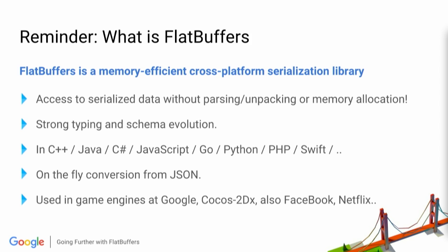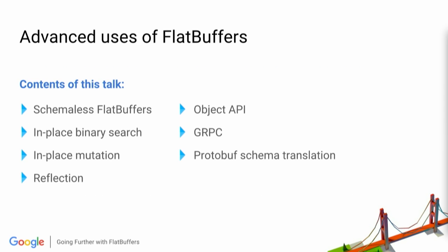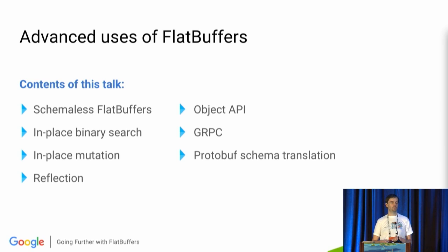If you're going to remember just one thing about it, it allows in-place access of serialized data without first parsing or unpacking it, and it does all this while still allowing the data to evolve. It is strongly typed through schemas, supports lots of languages, and import/export to JSON. It is used in game engines, internally at Google, and externally — for example in Cocos Studio X — and also widely outside of games, for example at Facebook and Netflix.